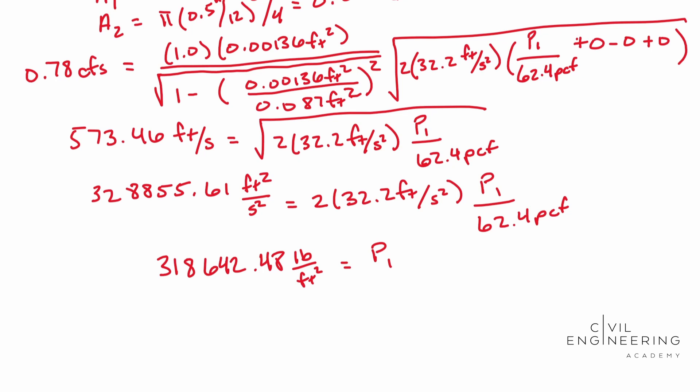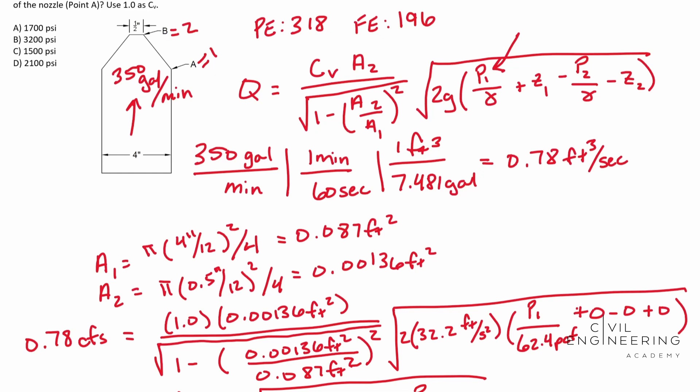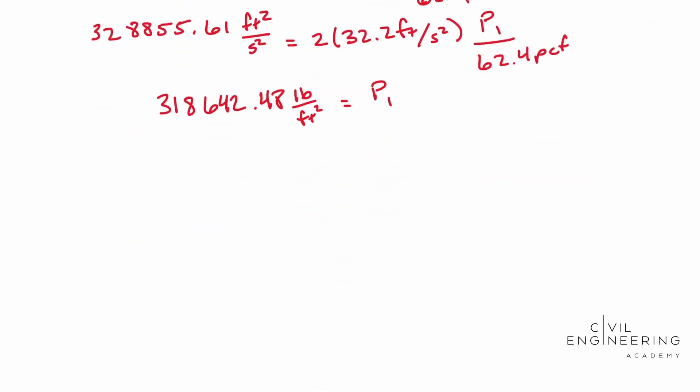Okay. So we almost have it in the units that we want. However, we do notice that our units are in PSI in the answer bank. So we need to convert this over to PSI. And the way that you do that is by dividing by 144. So if you divide this guy by 144, you should end up with 2212.80 PSI.